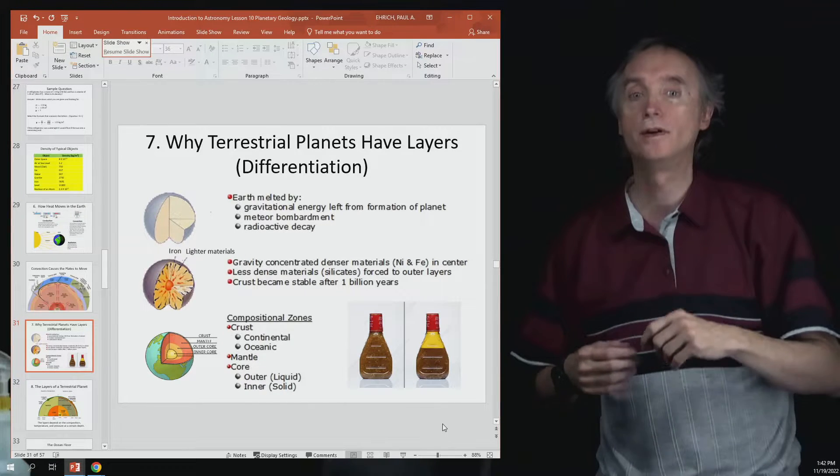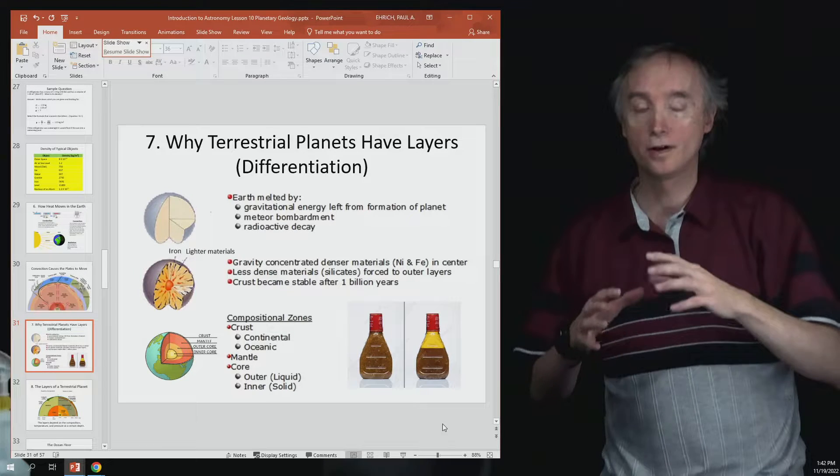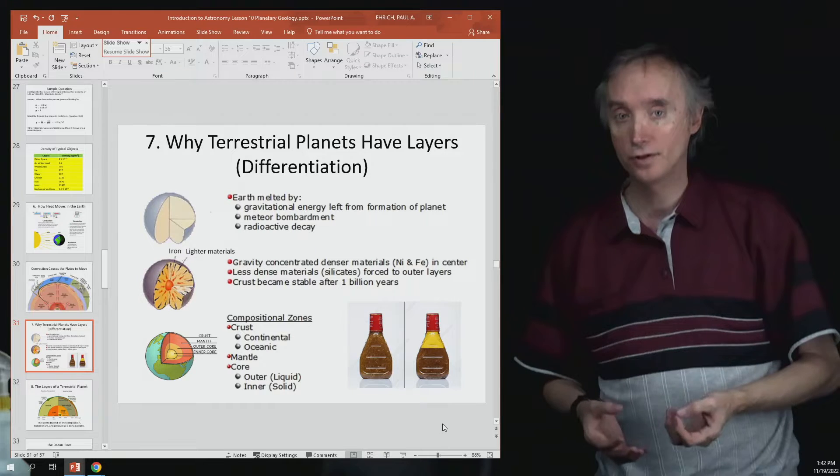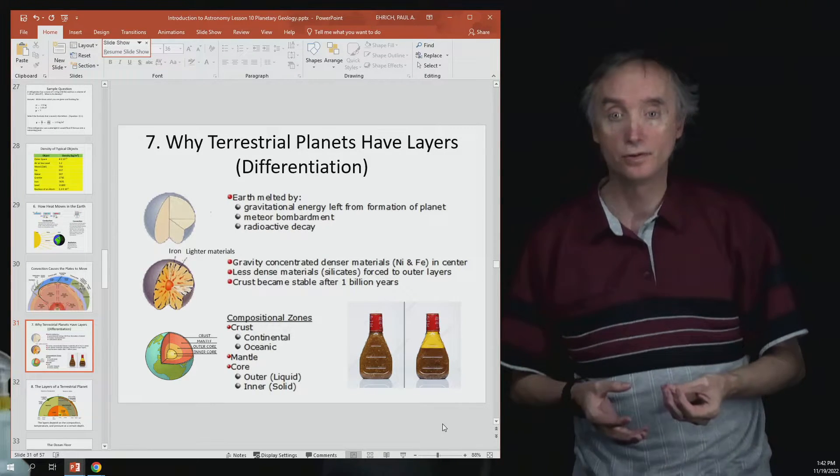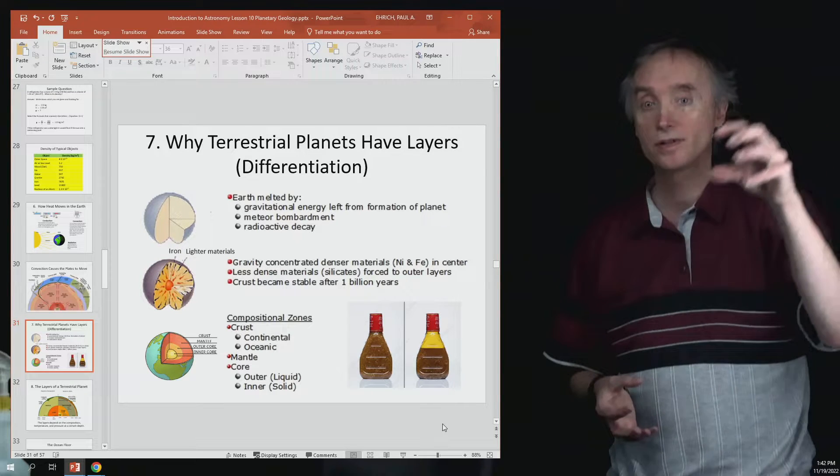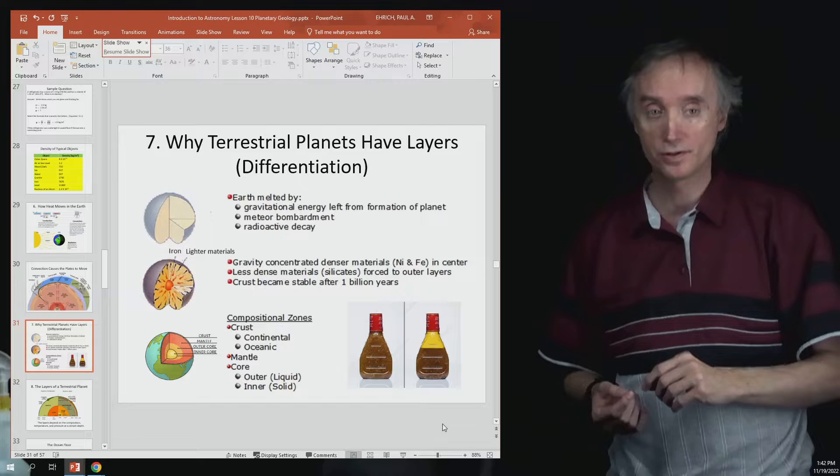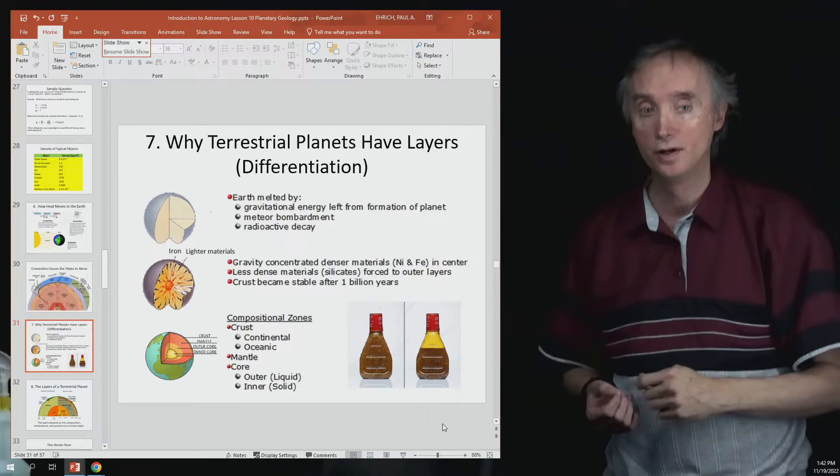And that is going to be because of density. This process of the planet creating different layers is going to be called differentiation, and so the heavier materials went to the center of the planet and likewise the lighter materials that were inside the Earth floated up to the surface.